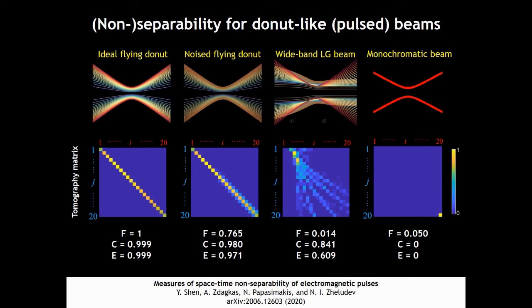The wideband LG beam, we know that is not supposed to have the isodiffraction. So the fidelity is nearly 0. That means it has a very different spatial spectral structure. And the monochromatic LG beam fidelity is also nearly 0.